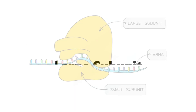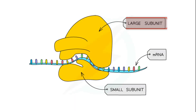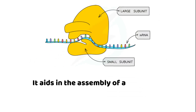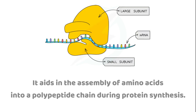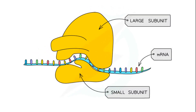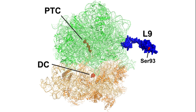The larger subunit is the main catalytic unit of the ribosome. It aids in the assembly of amino acids into a polypeptide chain during protein synthesis. The large subunit also has a peptidyl transferase center, which facilitates the formation of peptide bonds between adjacent amino acids, crucial for protein elongation.